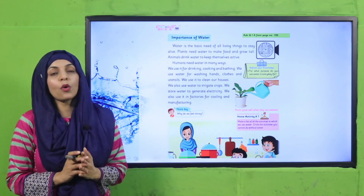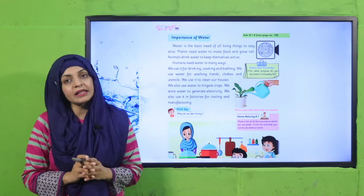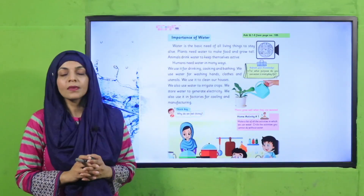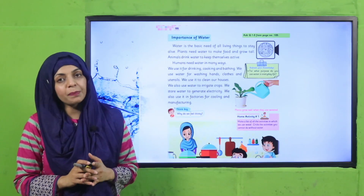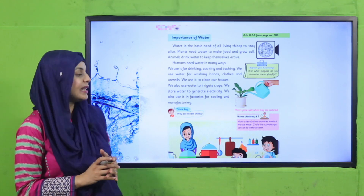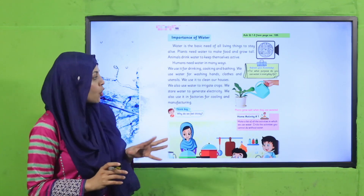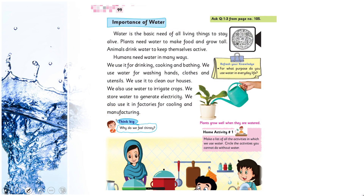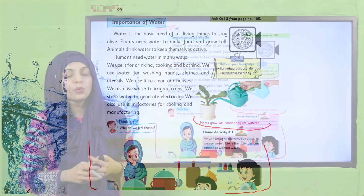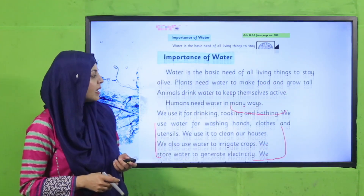Now it's time to take out your GK2 books and quickly open page number 99. I hope everybody has opened the page. First, quickly look at the pictures — we are studying the importance of water and how we use it daily. You can see water being used to water plants, and in your kitchen and garden for cooking and drinking.